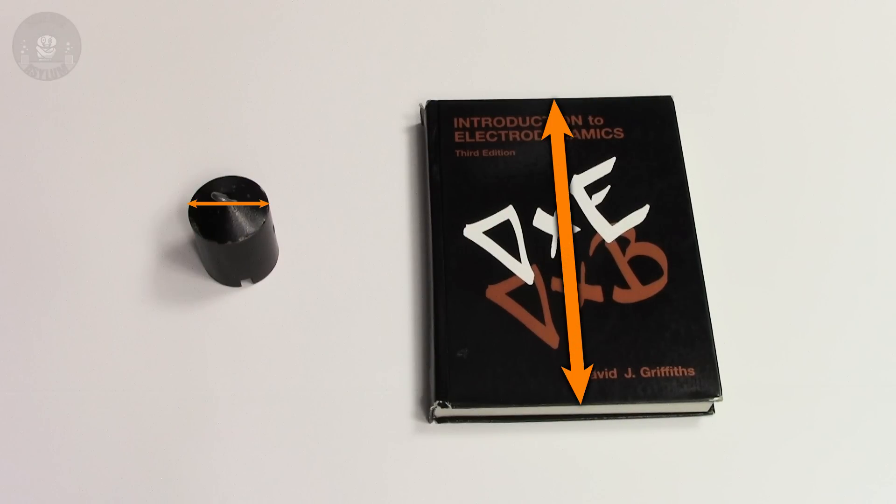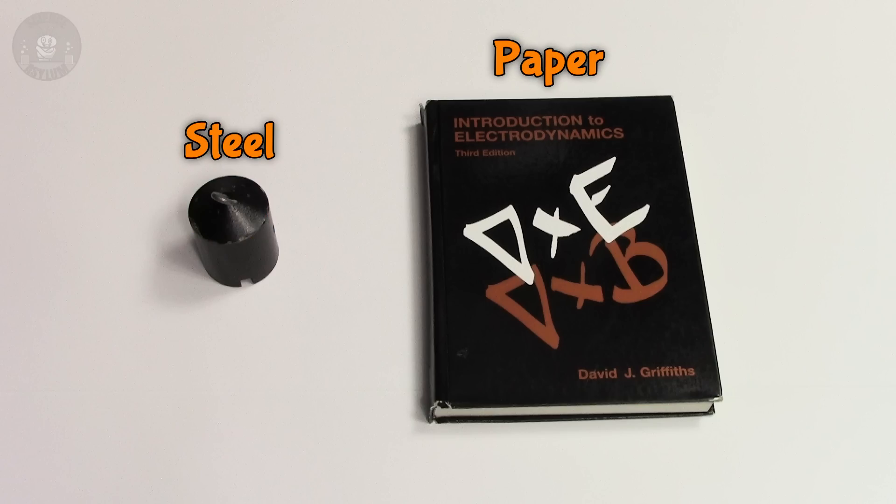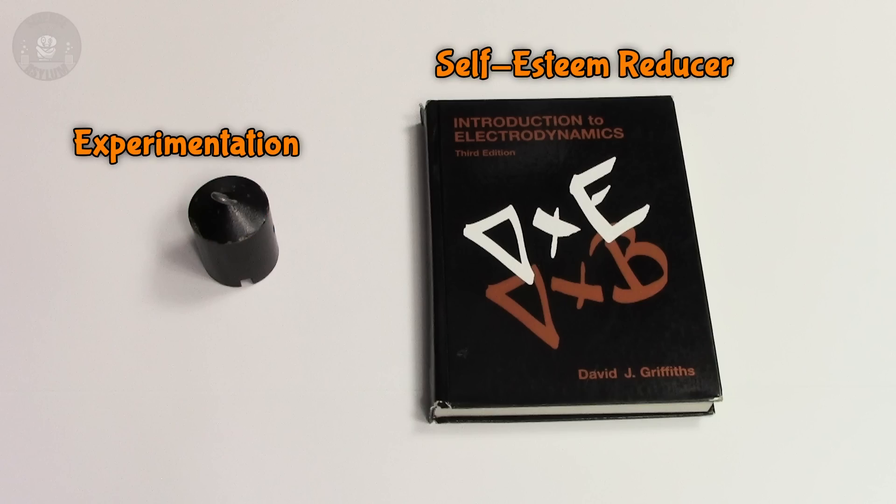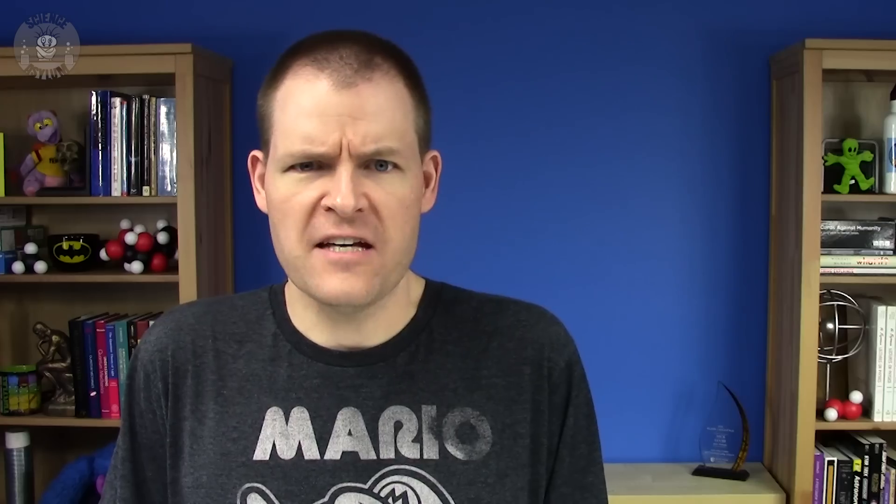Then again, so is this. These two objects are different sizes, different shapes, made of different materials, and have different purposes. So when I say something like this is one kilogram, what am I saying about it? What the heck is mass?